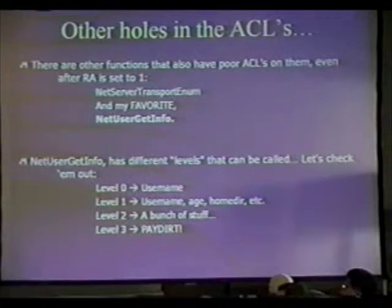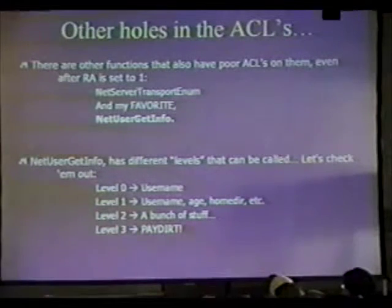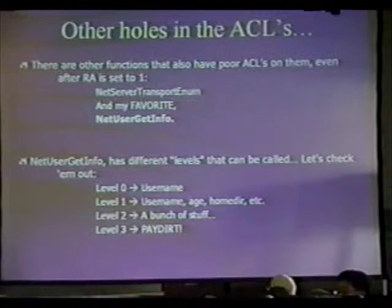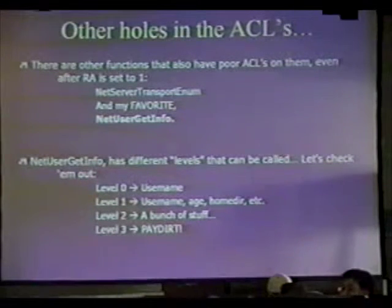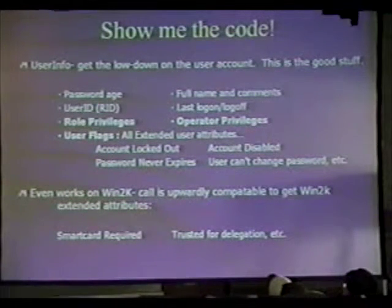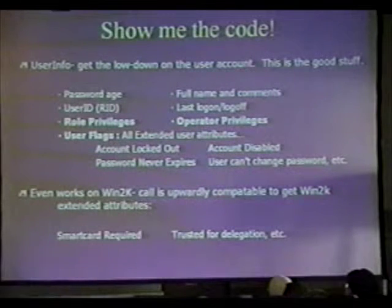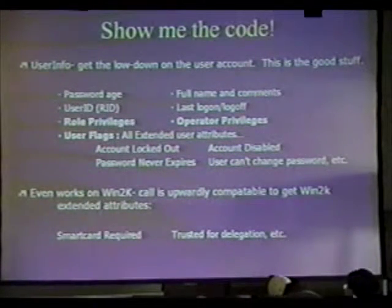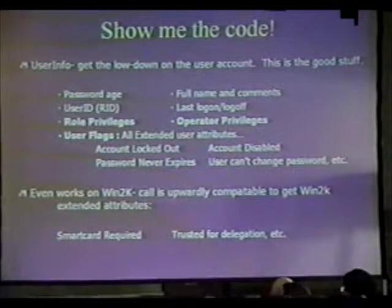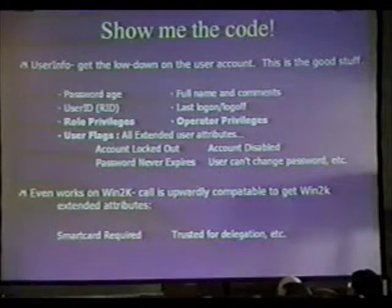Net user get info also doesn't have any proper ACL. That's my favorite. It has a couple of different levels: level zero gives you the username, level one gives you the account age and home directory, level two gives you even more, and level three — I call it pay dirt — gives you everything: password age, RID, privileges, role privileges, user flags, all extended information. It works on Windows 2000.